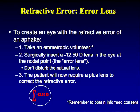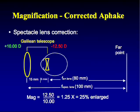To understand magnification in the eye, consider a mental model: take an emmetropic eye and insert a minus 'error lens' inside to simulate refractive error, then correct it with a plus lens in front. The minus lens inside is the error lens; the plus lens outside is the correcting lens. This aphakic patient is effectively viewing through a Galilean telescope.